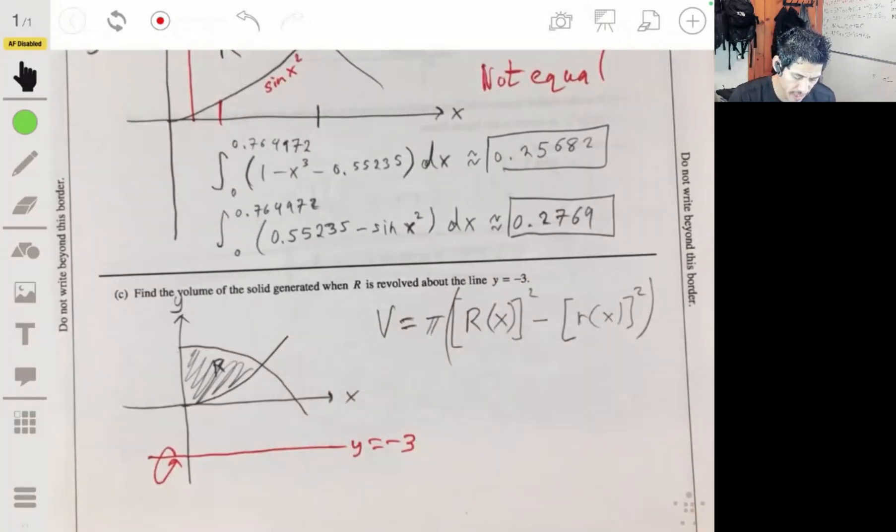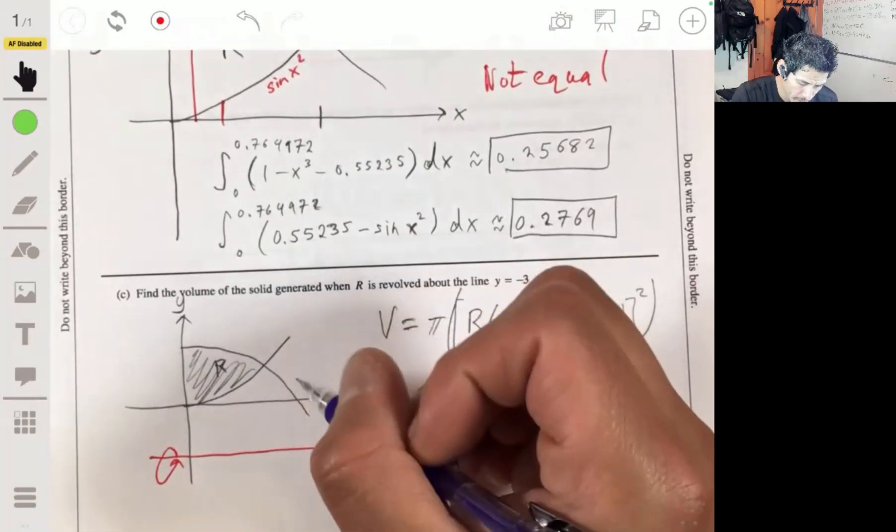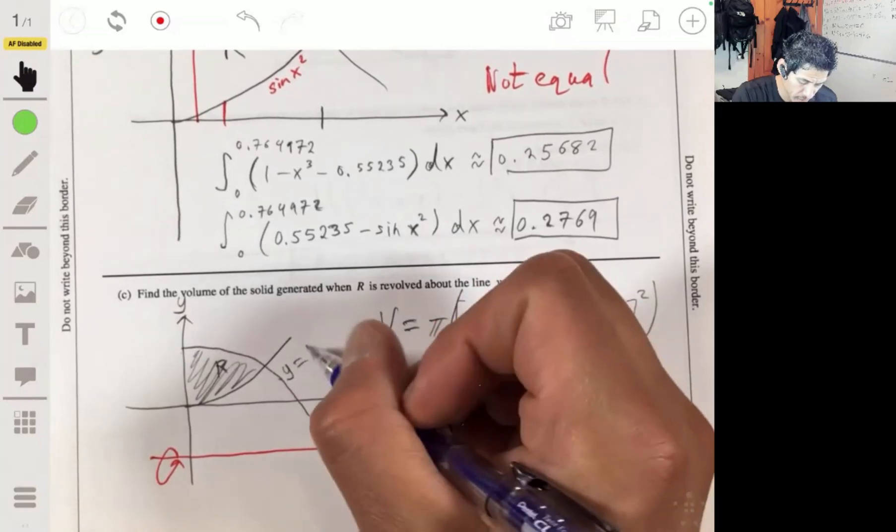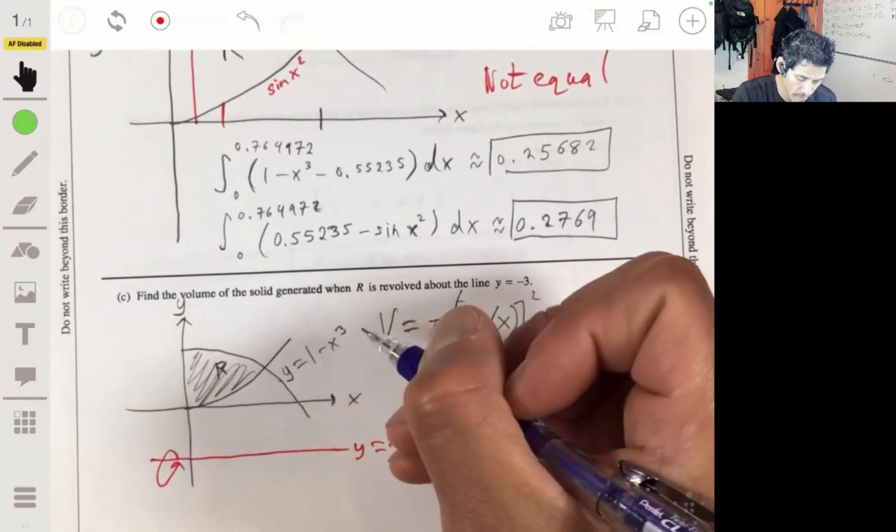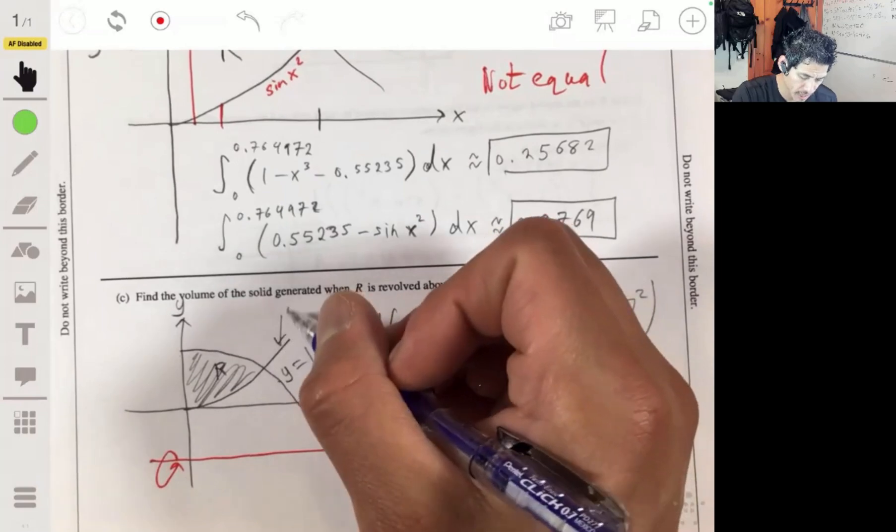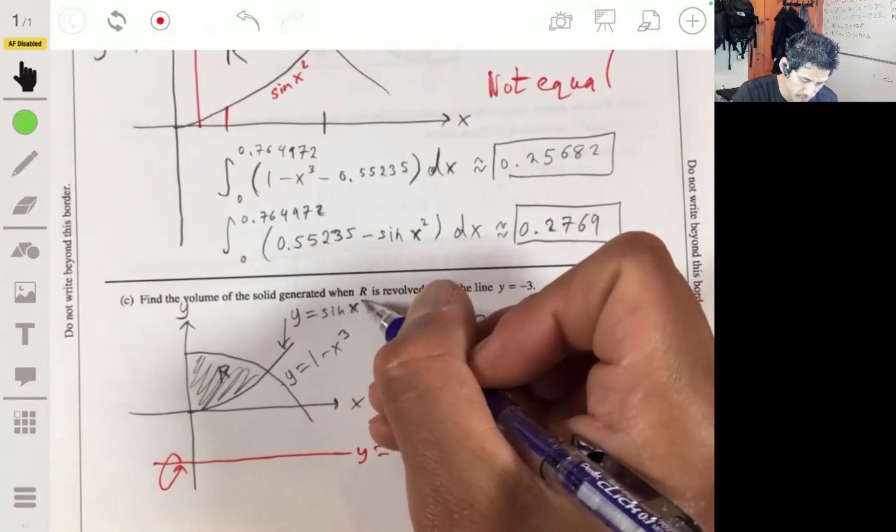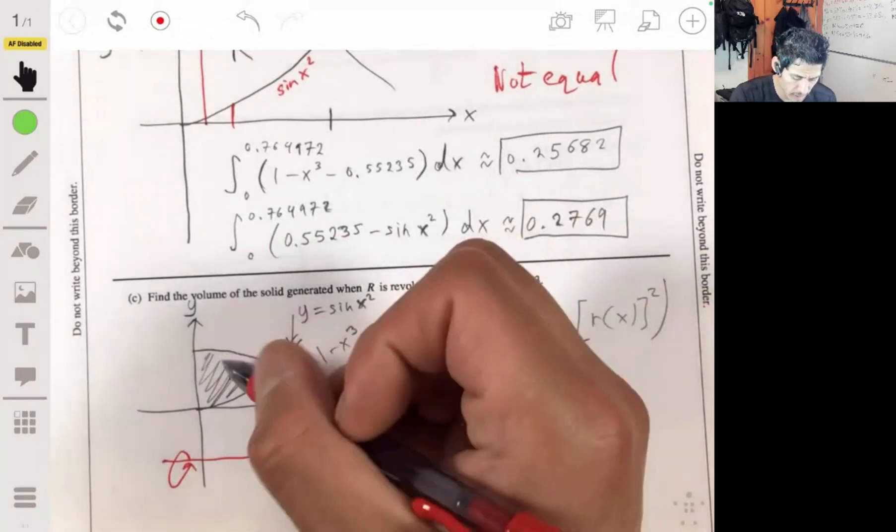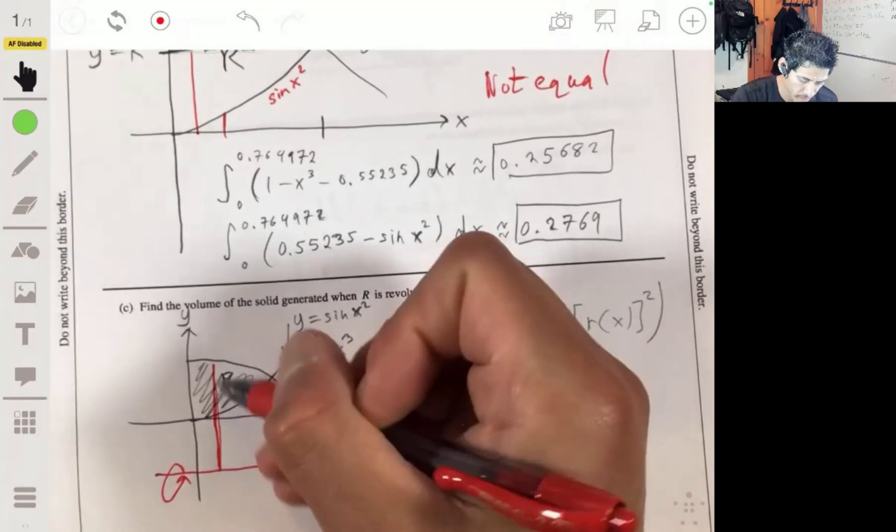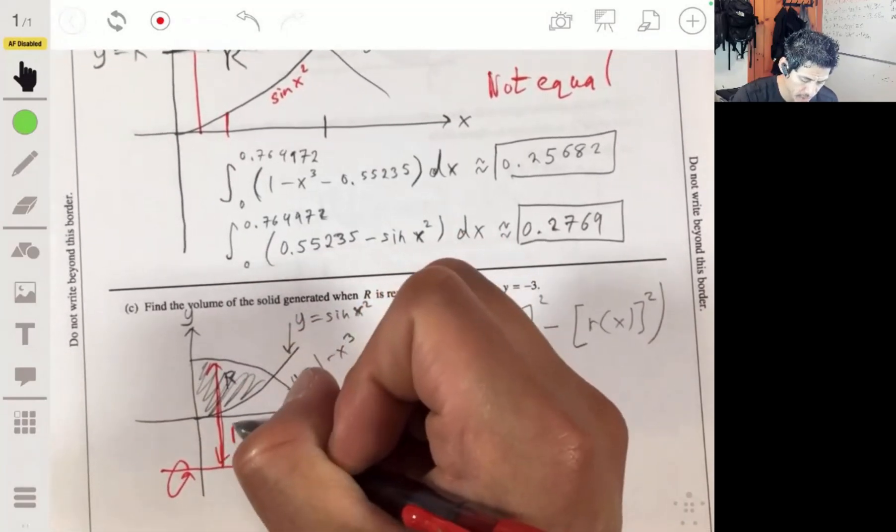So then, in this case, again, this is the y equals the 1 minus x cubed. And this line is the y equals the sine of x squared. So the large radius is going from here to here. That's big R.